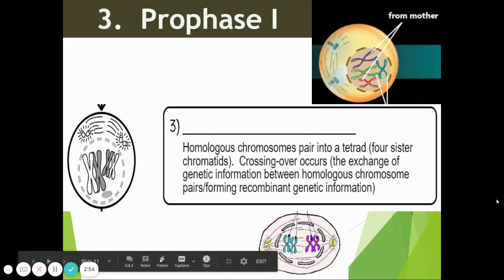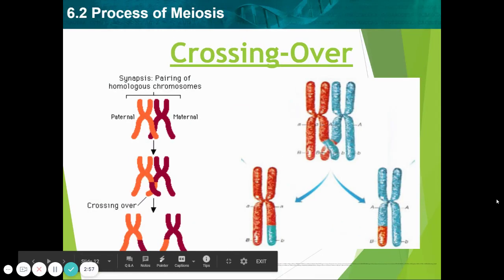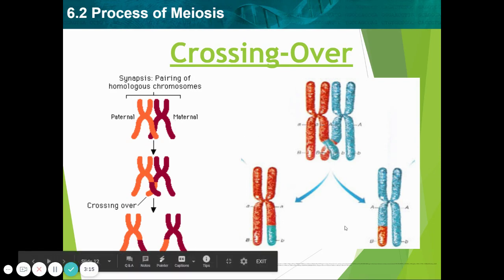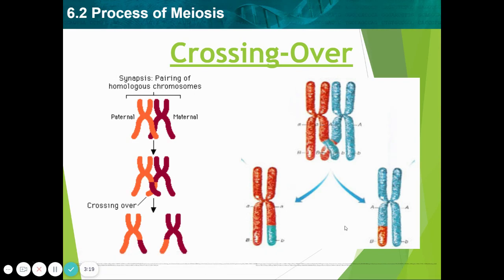At this point, and only at this point, homologous chromosome pairs join together into something called a tetrad. 'Tetra' means four, so this tetrad has both chromosomes in close proximity around their centromere. What ends up going on is that there is a little bit of exchange of genetic material between the different chromosomes, and this is called crossing over.